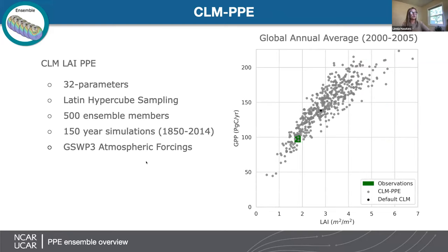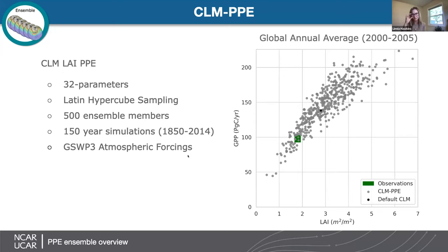We identified 32 parameters in the community land model CLM that were influential on leaf area index and also GPP. We then sampled that 32-dimensional parameter space using a Latin hypercube and ran 500 ensemble members, or unique parameterizations of the model, after spin-up from 1850 to 2014. These were run offline using reanalysis atmospheric forcings, and they're run on a sparse grid, which helps improve our computational efficiency and makes this large ensemble possible.